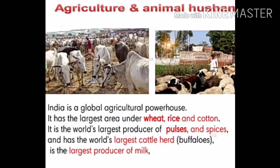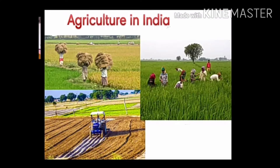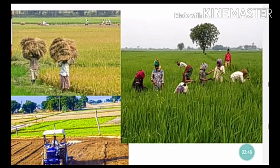India is a global agricultural powerhouse. It has the largest area under wheat, rice, and cotton, and is the world's largest producer of pulses and spices — something we never heard about in Brazil. Since ancient times, India has been famous for its spices worldwide. India also has the largest cattle herd, especially buffaloes and cows, and is the largest producer of milk in the world. About 48% of people are engaged in primary occupations, and the majority are in agriculture and allied activities like animal husbandry.